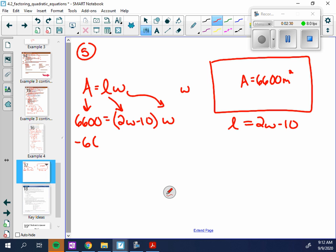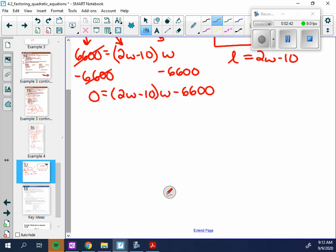So if I subtract this over to the other side, then I'd have 0 equals 2w minus 10, times w, and then minus 6,600. Well, now you can definitely see this is not factored, actually.